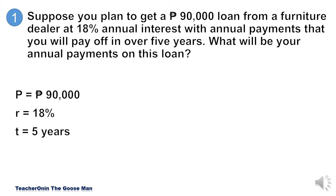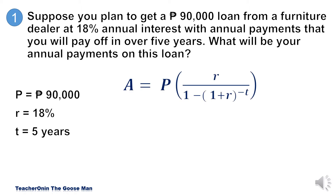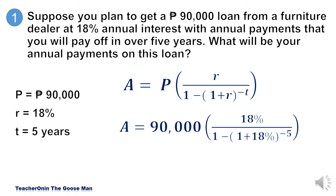Applying the formula for this problem, we have: present value times R, divided by 1 minus the expression (1 plus R) raised to negative T. Substituting the given values of the present value, rate, and time, our annual payment for this loan is equal to P28,780.